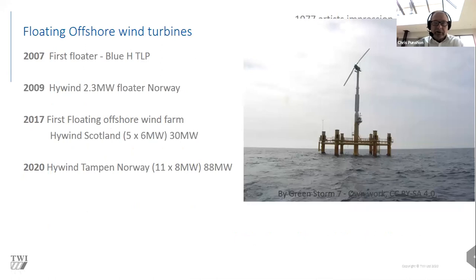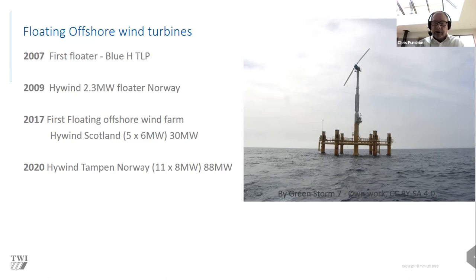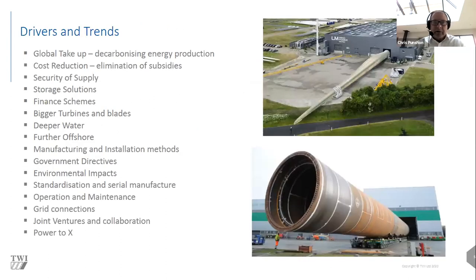Interestingly, the first concept of offshore wind was described in the 1970s, and an artist's impression from that time doesn't look that different from reality today. For floating structures, the first tension leg platform was produced in 2007 for an experimental program. More recently, Hywind has tested a 2.3 MW floating offshore wind turbine in Norway. The first floating offshore wind farm, Hywind Scotland, was installed in 2017, and Hywind Tampen in Norway is producing 88 MW from a floating farm.